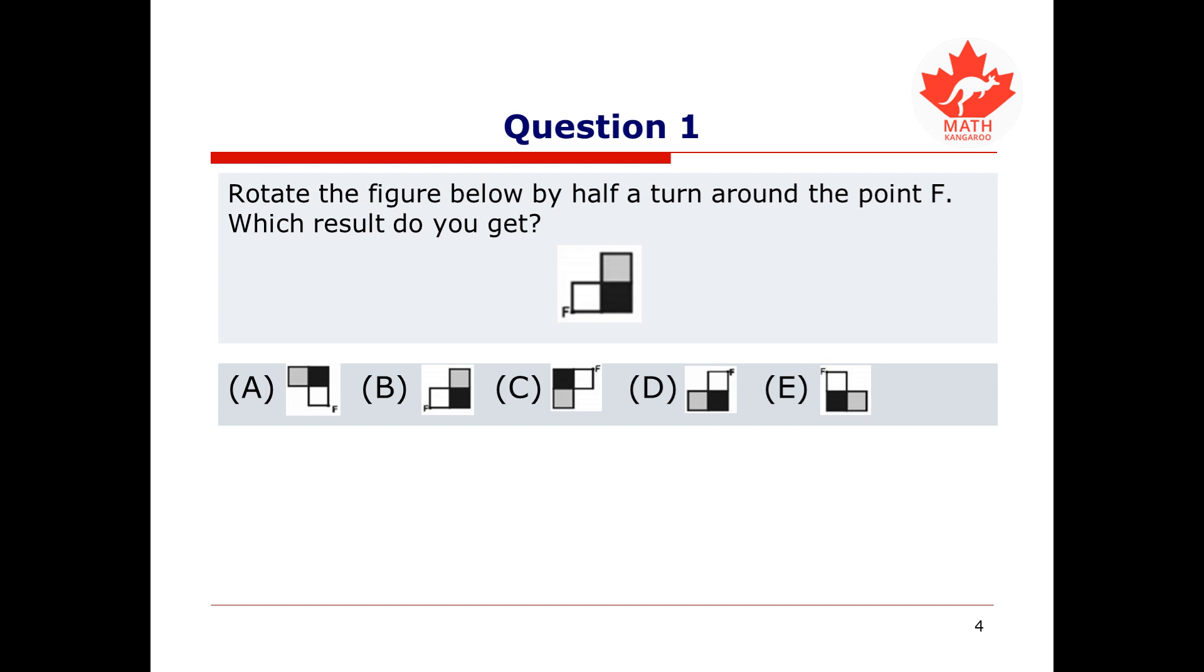Let's start with a simple question. Your job is to rotate this figure by half a turn around the point F. Which result do you get? Like in all the Math Kangaroo Contest questions, you have 5 options and only one is the correct answer. Pause this video and try working it out yourself. And when you are ready, keep watching to see how it's done.